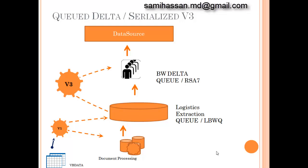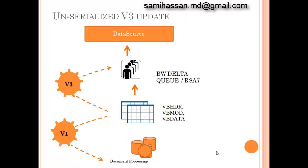Once in the BW Delta Queue, the delta extraction can be extracted to BW via a delta-enabled info package. Moving on to the final delta type, Unserialized V3: in this method, the Delta Queue is filled by a scheduled V3 run that picks up data directly from the update tables. Using update tables instead of a queue discards serialization of documents, but since no extra queues are written to, this method performs best among the three when huge amounts of data need to be extracted. However, lack of serialization can give erroneous results if not properly handled in BW modeling.